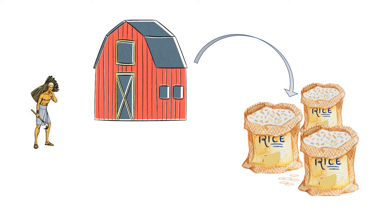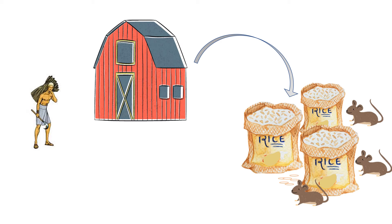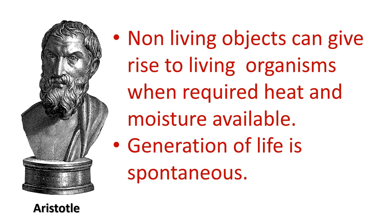Another example: in many parts of Europe, medieval farmers stored grain in barns in winter. In the rainy season, moisture used to cause spoiled and moldy grains, which led to lots of mice around. People then thought mice came from moldy grains. Aristotle was the first who theorized these ideas and said non-living objects can give rise to living organisms when the required heat and moisture are available, meaning generation of life is spontaneous.